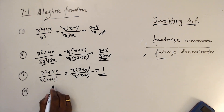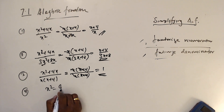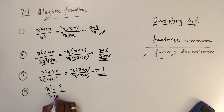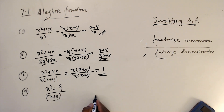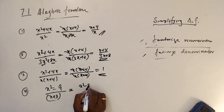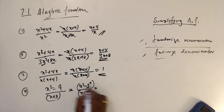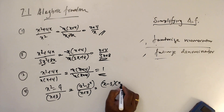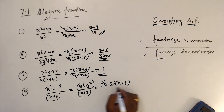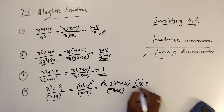Question 4: (x² − 9) over (x + 3). To factorize the numerator, recognize x² − 9 as x² − 3², which is a difference of two squares. So it factors as (x + 3)(x − 3). Then (x + 3)(x − 3) over (x + 3) — cancel (x + 3) — and the answer is x − 3.